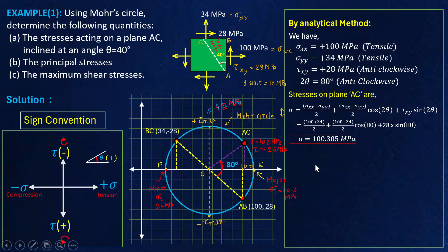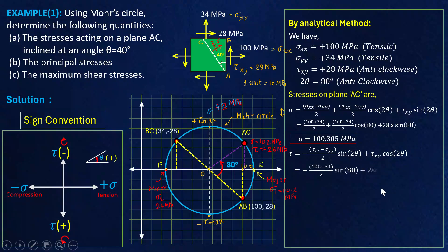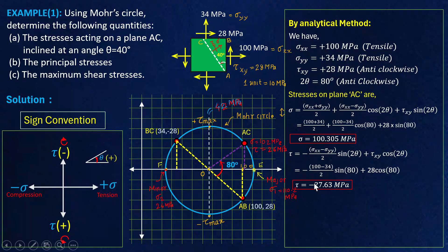Similarly, now we'll find the shear stress, which is given by the expression: tau = (sigma xx − sigma yy)/2 × sin(2θ) + tau xy × cos(2θ). Substituting the values and solving, the shear stress comes out to 27.63 MPa. Graphically we got approximately 26 MPa, so both are very close to the actual values. The graphical values may change if you draw a proper graph — you may get more accurate values.